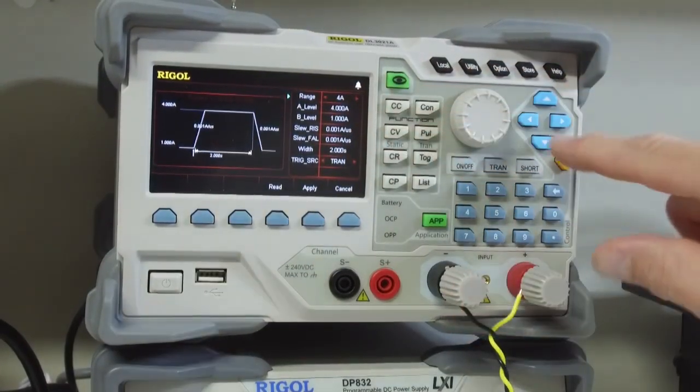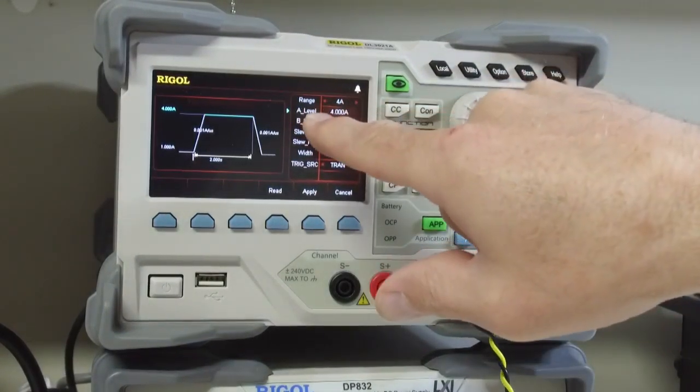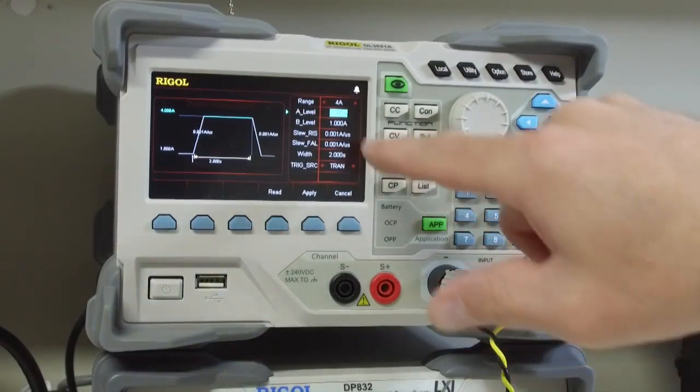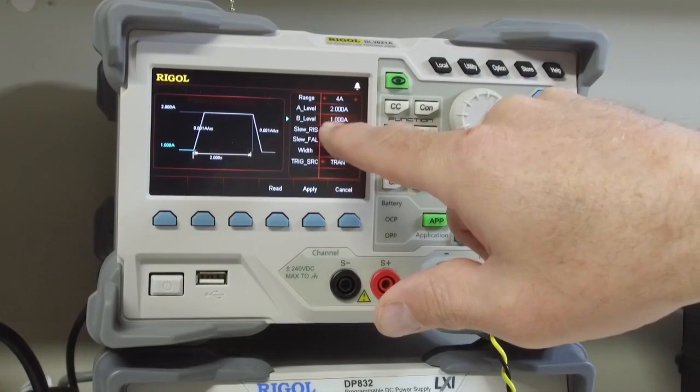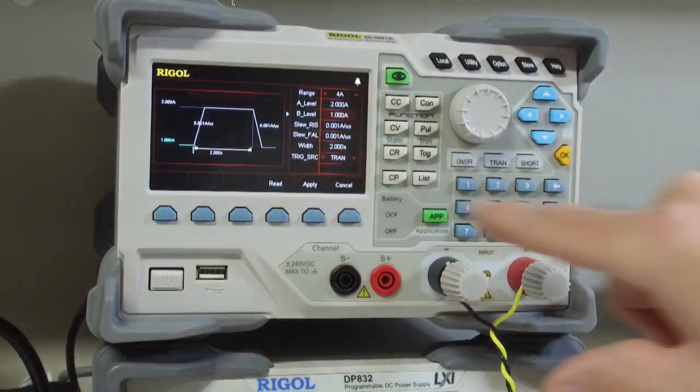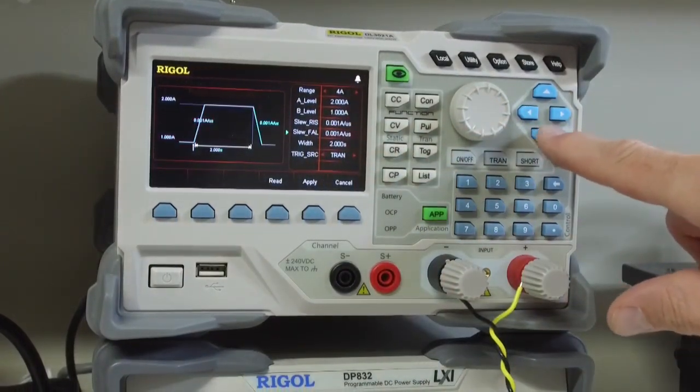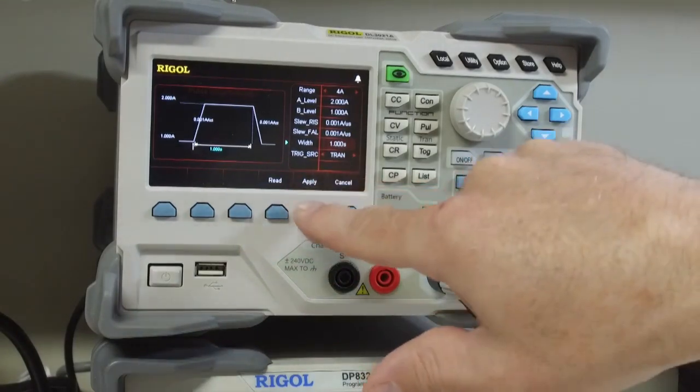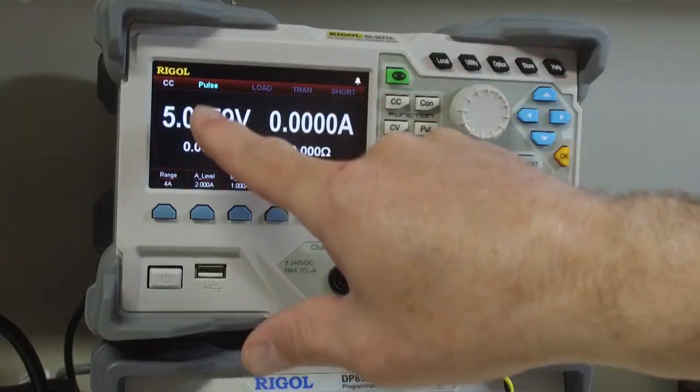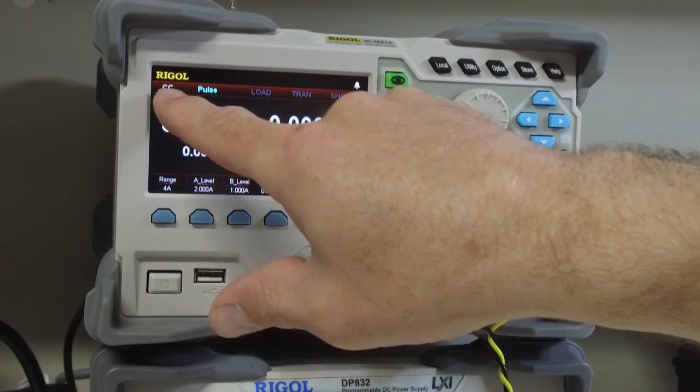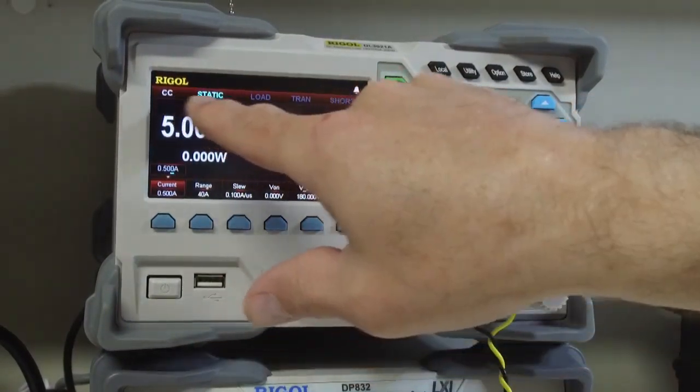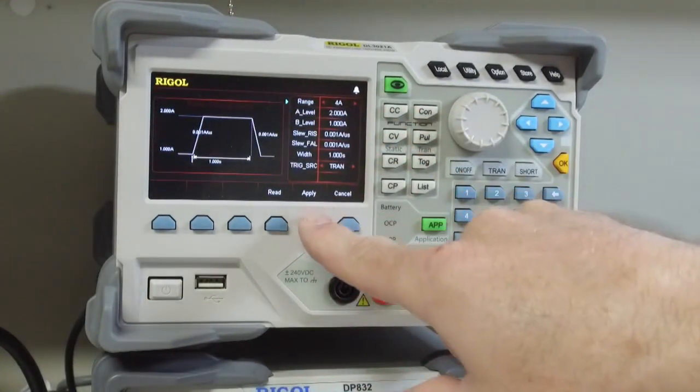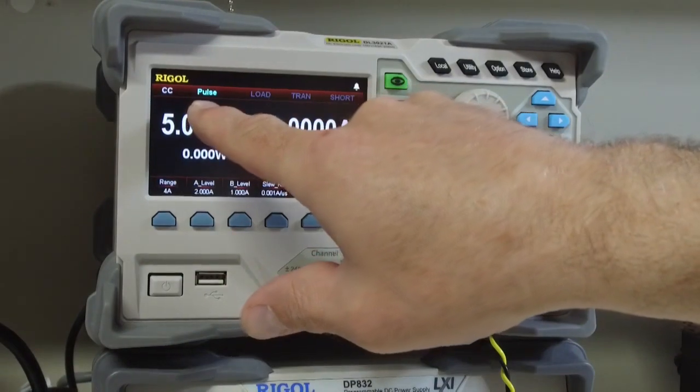So right now, I'm going to set the A level to 2 amps, 2.0. And our B level is set for 1. And I want a width of 1 second. Apply. Now we'll note that the mode I was in constant current, and static. If I want to get back into that pulse mode, I need to hit apply. And so now we're in pulse.